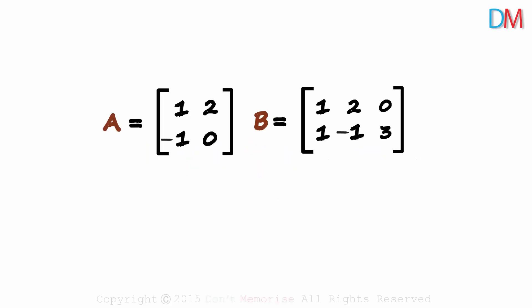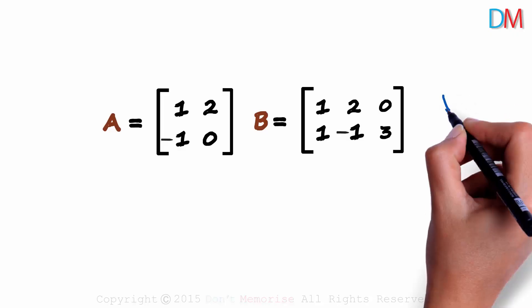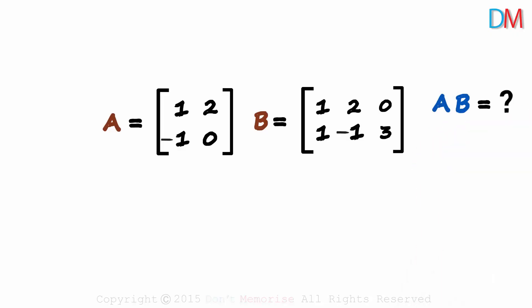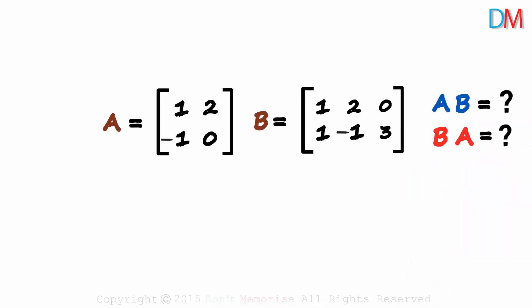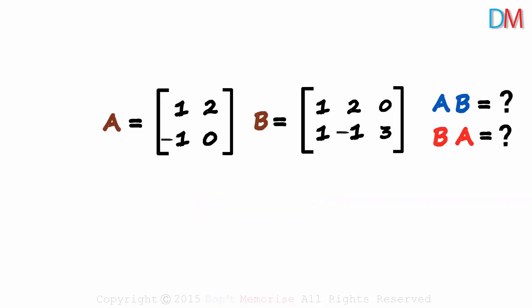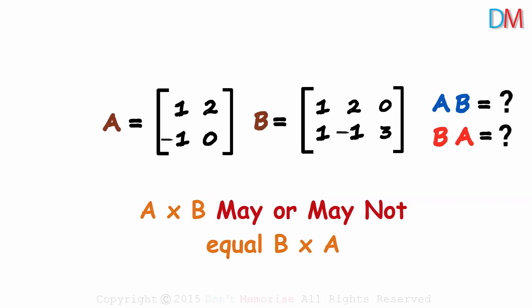Given two matrices A and B, how would you find AB and BA? Remember, matrices are not commutative. A multiplied by B may or may not equal B multiplied by A.